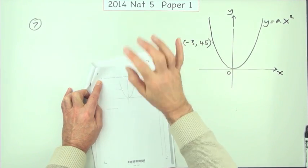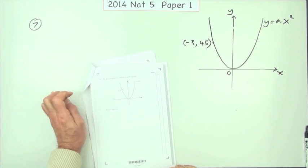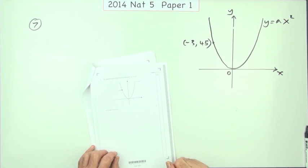Question 7 from the first paper in the 2014 National 5. A little two-mark question.